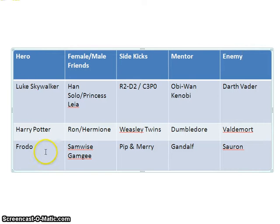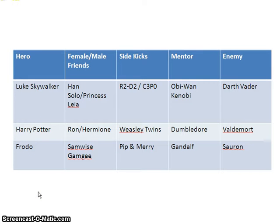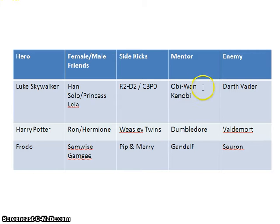We can start to see similarities across stories. Luke Skywalker is a young orphaned boy; Harry Potter is also a young orphaned boy; Frodo was also a young orphaned boy. I can't really think of a girl who follows this pattern, but maybe you will — let me know. The male and female friends: Han Solo and Princess Leia; Ron and Hermione; Samwise Gamgee for Frodo. The sidekicks for comedic effect: the robots; the Weasley twins; Pippin and Merry. The mentors all fit the wizard mentor archetype, and then there's the ultimate enemy. Just a brief overview of the monomyth and some ways we interact with it in modern storytelling.